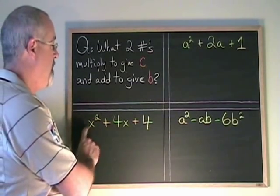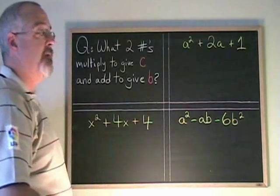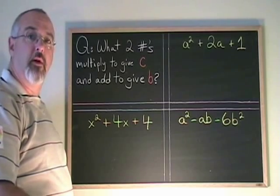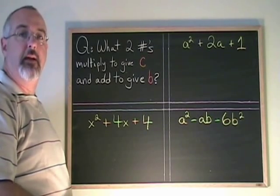In each of these cases, the numerical coefficient of the first term is 1. The first thing we do when factoring a simple trinomial is we define our a, b, and c.